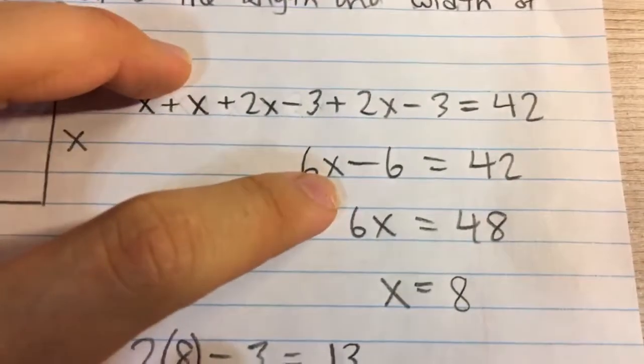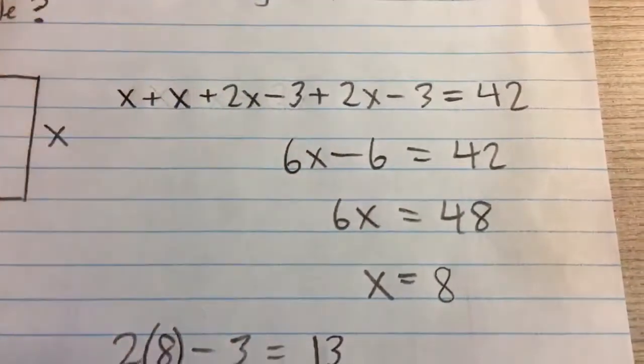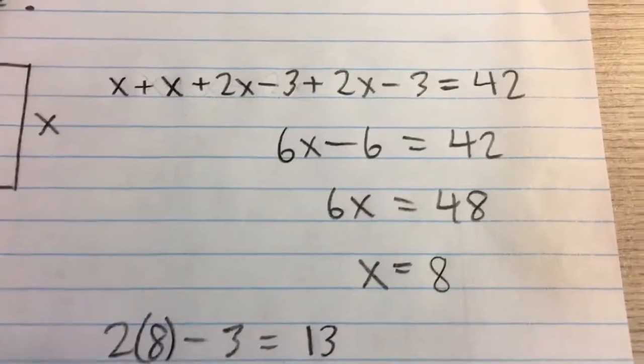And so if we add 6 to both sides, we'll get 6x equals 48, and then divide both sides by 6, we get x equals 8.